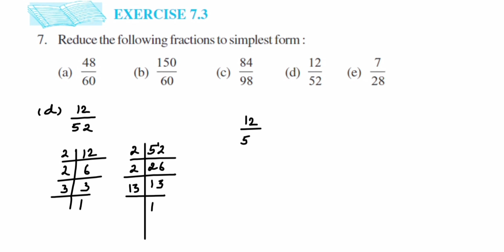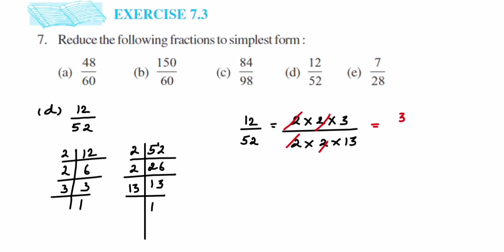Write it down: 12/52 equals 12 written as 2 × 2 × 3, and 52 written as 2 × 2 × 13. In numerator and denominator I have two 2s — cancel them. In the numerator we have 3 and in the denominator we have 13. So the fraction is 3/13. The simplest form of 12/52 is 3/13.